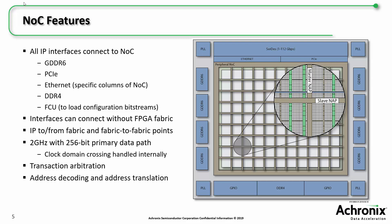All of our IP interfaces connect to the NOC, including GDDR6, PCIe, Ethernet — which connects to specific columns on the NOC — and DDR4. The NOC also connects to the FPGA configuration unit, or FCU, which allows the NOC to be used to load bit streams to the FCU that can then configure the FPGA fabric. For example, this allows the PCIe to send a bit stream over the NOC to the FCU before the FPGA fabric is even configured. These interfaces can communicate with each other using the NOC without the FPGA fabric. Additionally, the NOC extends over the FPGA fabric, providing a way to connect from IP to user logic in the FPGA, as well as point-to-point inside the fabric.